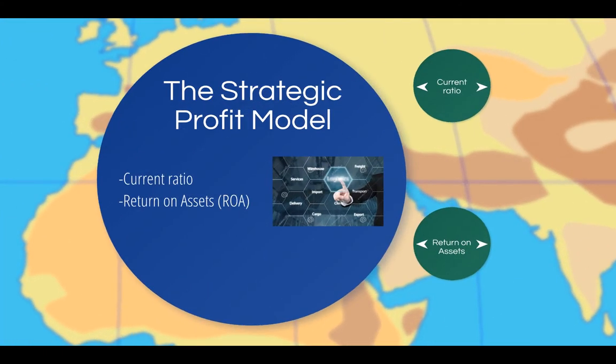The strategic profit model allows business managers to examine the best strategy to take to maximize profits. The strategic profit model includes current ratio, return on assets (also known as ROA), net profit margin, and asset turnover. As we discussed in the section on the income statement, profit is a basic financial measure that represents the difference between revenues and expenses. There are issues with reporting financial figures without providing an appropriate context, which is why many financial measures are reported as ratios that indicate the relationship of one number to another.